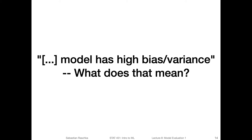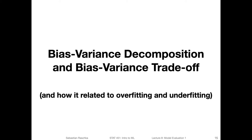If you read other research articles, blog posts, or textbooks, you will find that very often people say a model has high bias or a model has high variance. We are now in the process of dissecting what that means by looking at the so-called bias-variance decomposition, and there's also the so-called bias-variance trade-off.